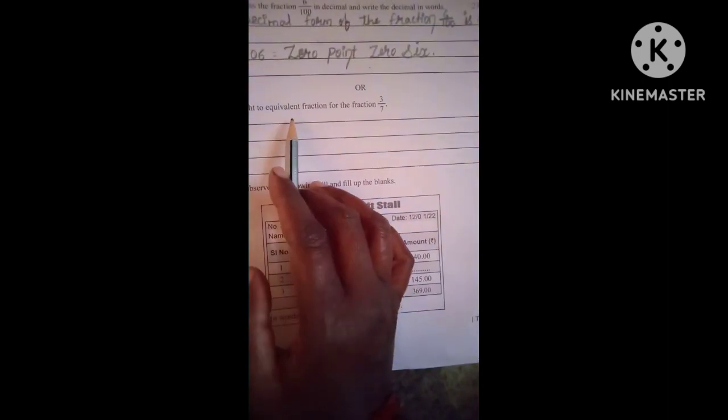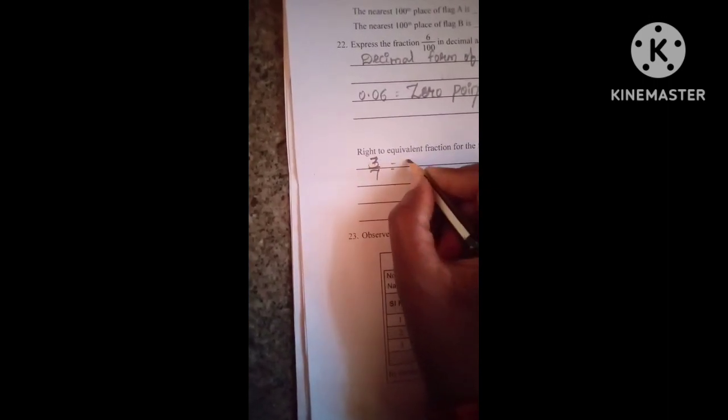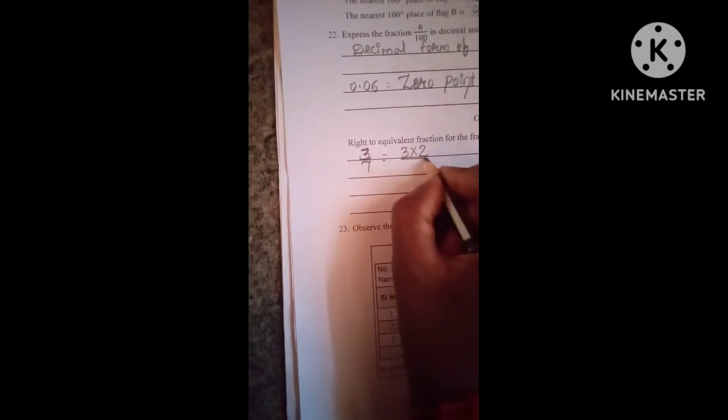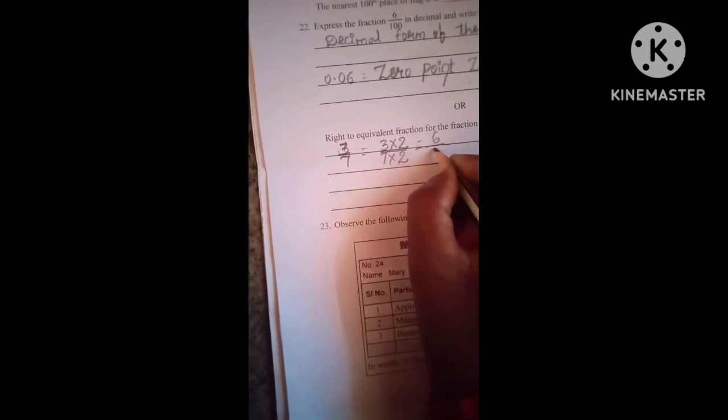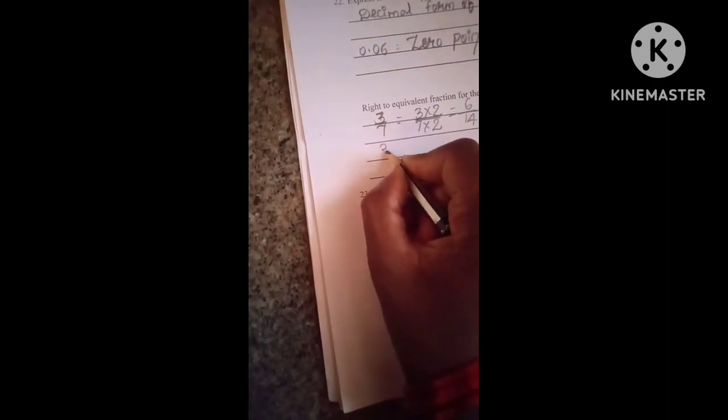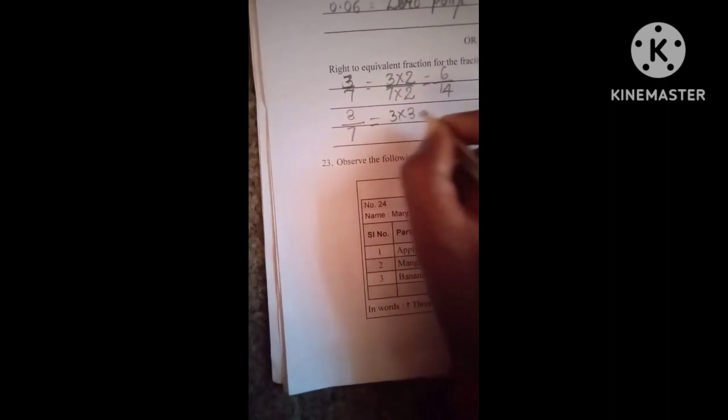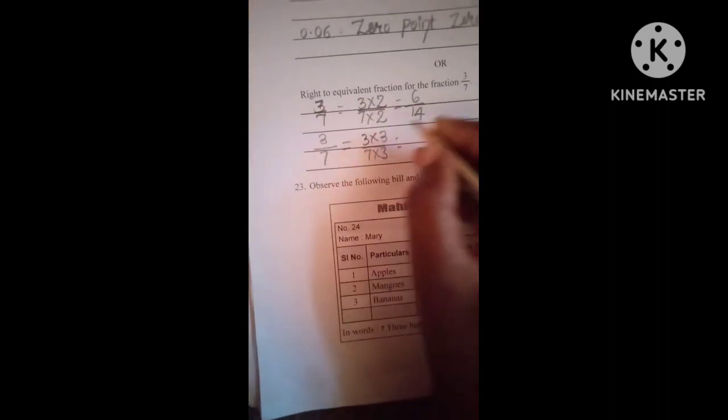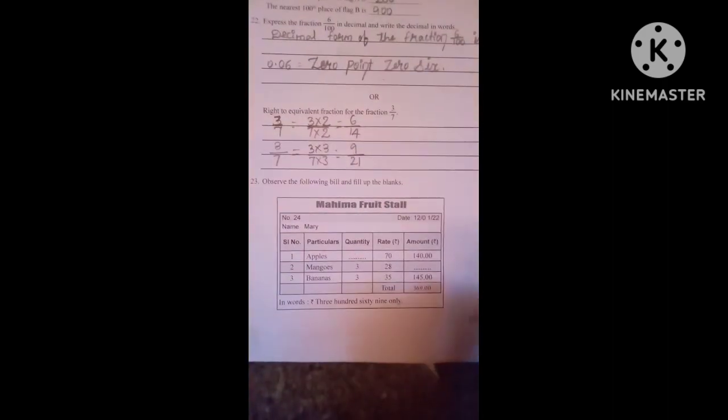Write two equivalent fractions for 3 by 7. You can write equivalent fractions. Already 3 they have given, now you can write 3 into 2 is 6, 7 into 2 is 14, so 6 by 14. Next, 3 into 3 is 9, 7 into 3 is 21, so 9 by 21. This is the answer. I hope this is clear.